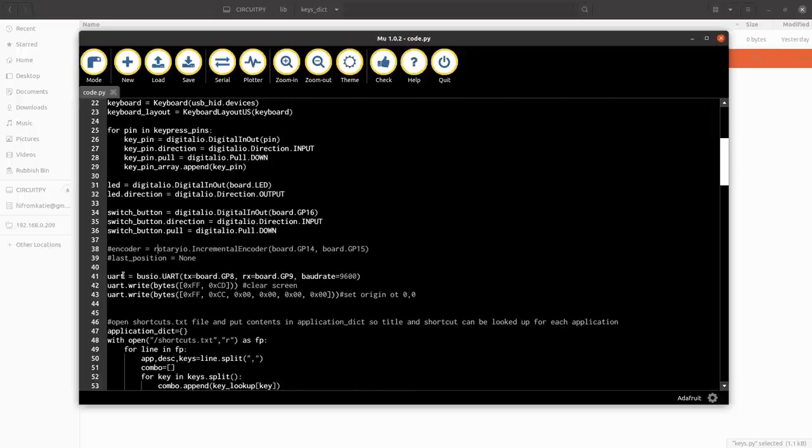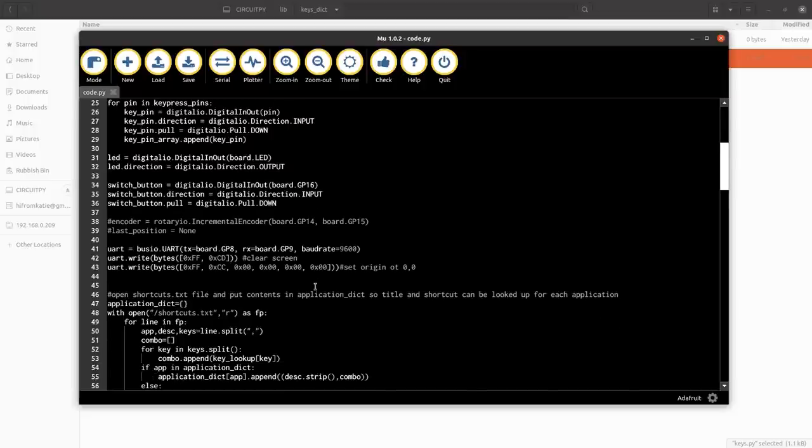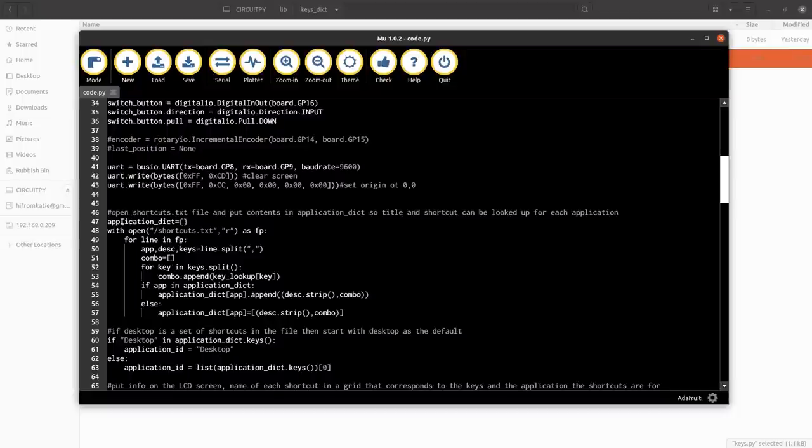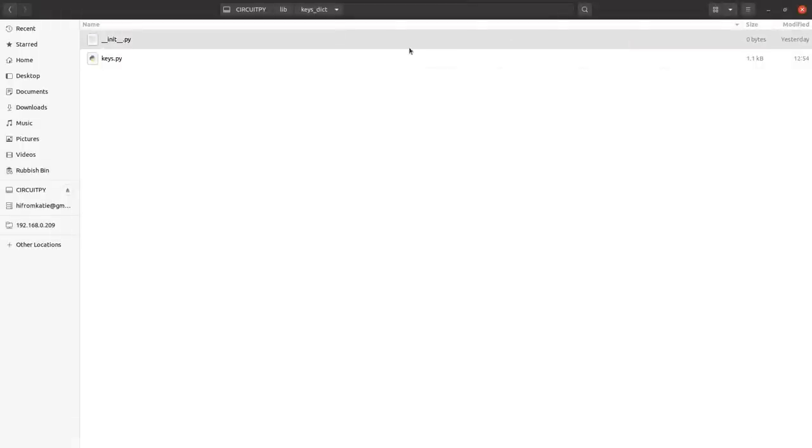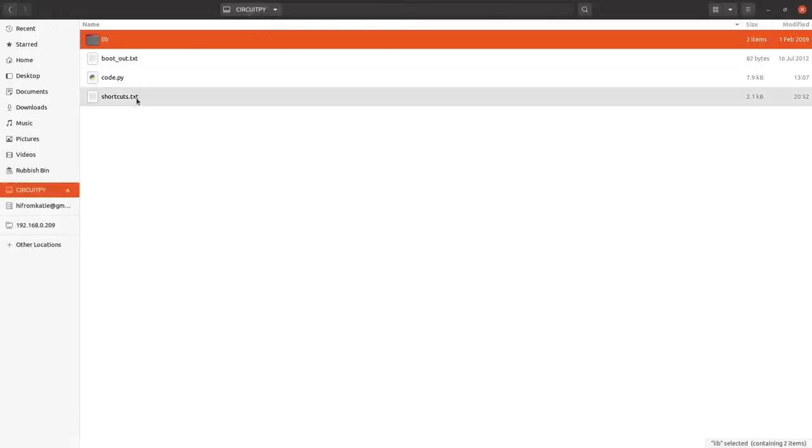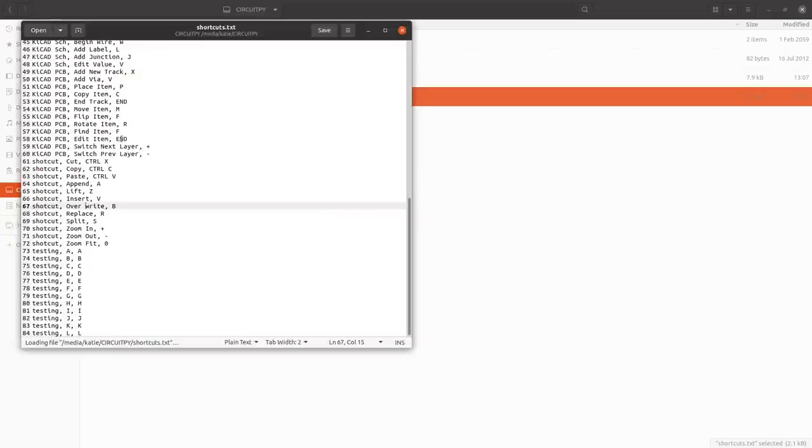So I'm setting up the UART using bus.io. This is for screen communications. I'm making a application dictionary. So this is opening a shortcuts.text file which is on the CircuitPython device.